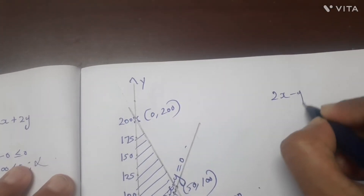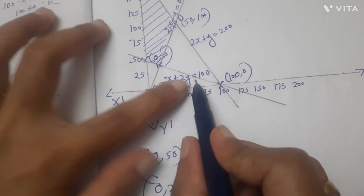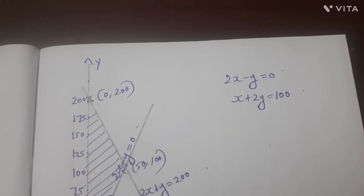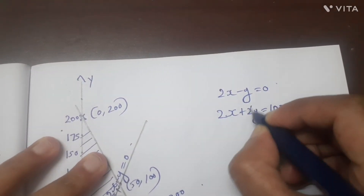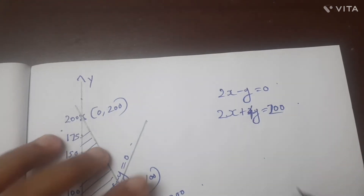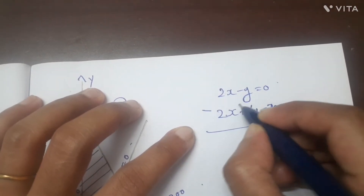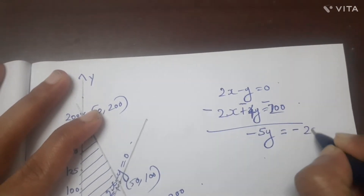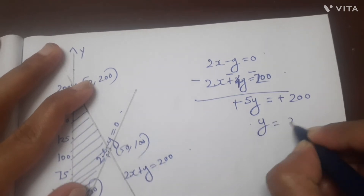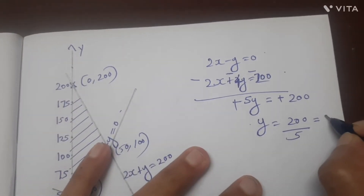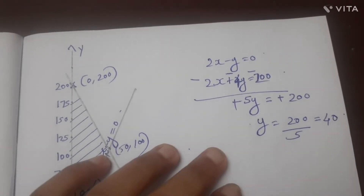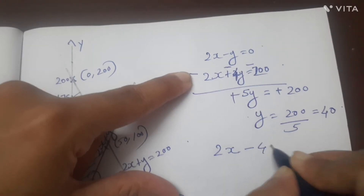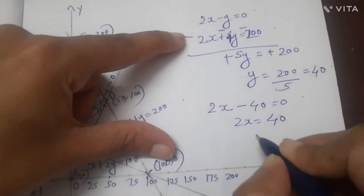Now solving simultaneously: 2x minus y equal to 0, and x plus 2y equal to 100. Multiply the first equation by 2: we get 2x and 4y equal to 200. Adding gives 5y equal to 200, so y equal to 40. Then 2x minus 40 equal to 0, so 2x equal to 40, x equal to 20. The intersection point is (20, 40).